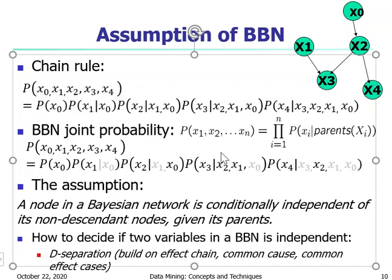These assumptions allow the simplification from the chain rule to the BBN joint probability formula, dramatically simplifying computation. However, not all variables have this kind of dependence pattern — many situations do not fit this assumption. BBN is useful to model scenarios where variables roughly conform to the assumption. Examples include printer diagnosis, other equipment diagnosis scenarios, and medical diagnosis — scenarios with known causal relations and good ways to estimate probabilities, where BBN has shown to be quite effective.